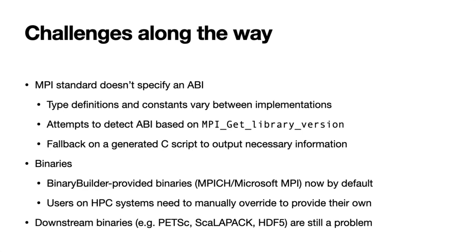Some of the biggest challenges are dealing with the MPI binaries themselves. The MPI standard doesn't specify an ABI — the type definitions and constants vary between implementations. Currently we try to detect the ABI, and if that doesn't work, we fall back on a generated C script that outputs all the necessary information. For a long time you had to provide your own binary, but thanks to Mosè Giordano, we now have BinaryBuilder-provided binaries using MPICH or Microsoft MPI, though users on HPC systems will probably want to override these to leverage fast networking hardware. Downstream binaries are still a problem and something we don't have a good solution for yet. Looking forward, I'd love to add more functionality, and contributions are welcome.